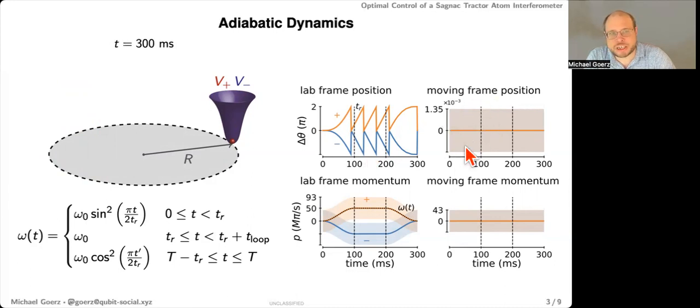So if you look at the expectation values in the moving frame, you can see, so that's the frame relative to the moving potential. Everything actually always perfectly stays at zero. So now we end up with these two wave packets on top of each other, and we'll just apply an inverse pi over two pulse to recombine it between the two spin potentials.